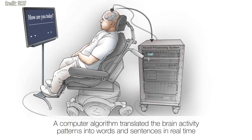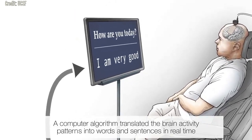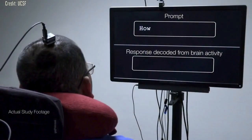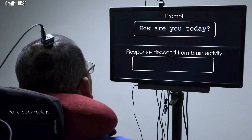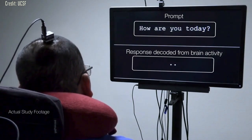To test their approach, the team first presented BRAVO-1 with short sentences constructed from the 50 vocabulary words and asked him to try saying them several times. As he made his attempts, the words were decoded from his brain activity, one by one, on a screen.